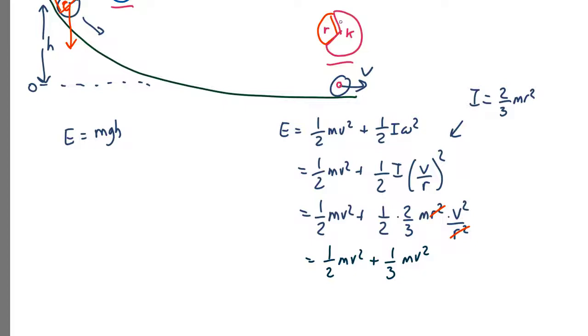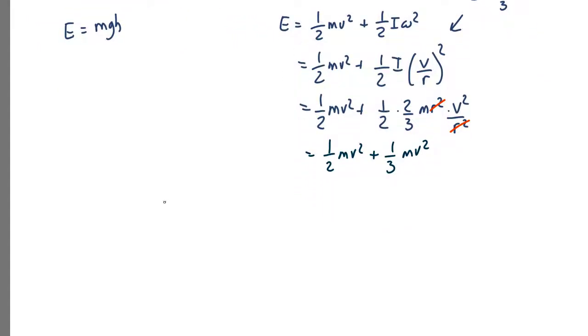Okay so setting those equal to each other we find that m g h equals what's a half plus a third that's going to be, we'll call it a sixth. This is going to be three sixths and two sixths so it's going to be right up to five sixths m v squared. So rearranging we get v squared masses cancel equals six g h over five.